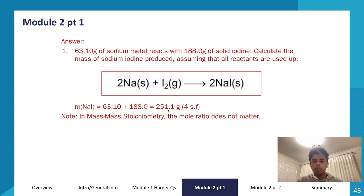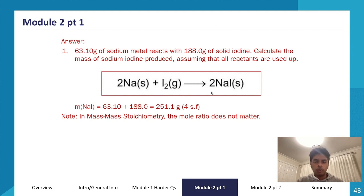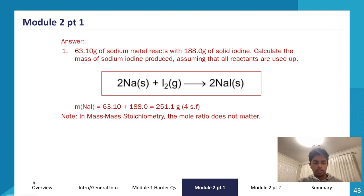The answer is 251.1 grams to four significant figures. For significant figures: look at the data given and find the value with the lowest number of significant figures used in your calculation — your answer should be written to that number of significant figures. For example, if they gave us 63 instead of 63.10, the lowest significant figures would be 2, so our answer would be 250 instead of 251.1. Because all the data given here is to four significant figures, our answer is also to four significant figures.